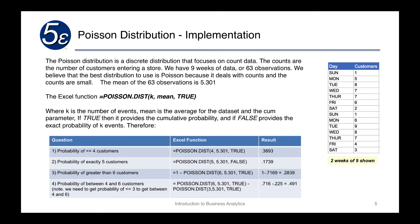That result of nearly 50 percent makes sense, because the mean or expected value is around 5.3, which falls right in the middle of the four-to-six range. So we'd expect roughly 50 percent of the counts to fall in that interval.